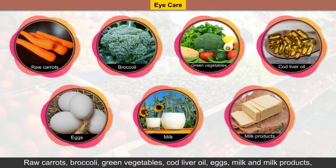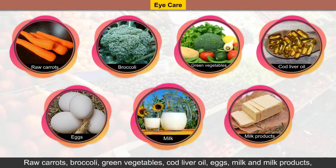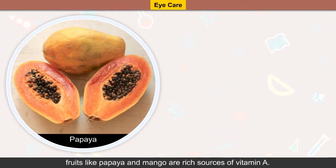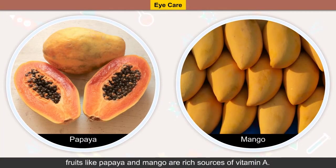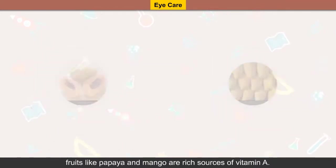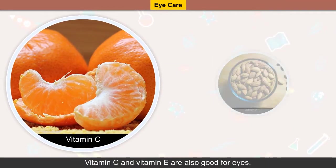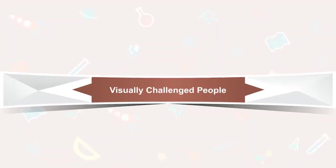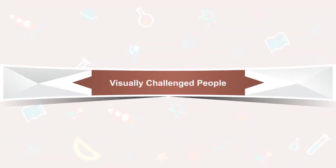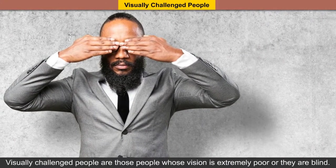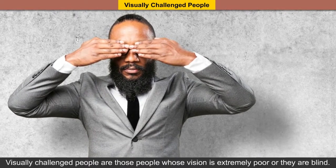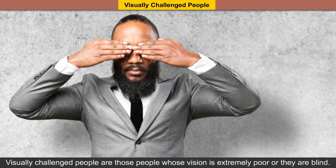Green vegetables, cod liver oil, eggs, milk and milk products, and fruits like papaya and mango are rich sources of vitamin A. Vitamin C and vitamin E are also good for the eyes. Visually challenged people are those whose vision is extremely poor or who are blind.